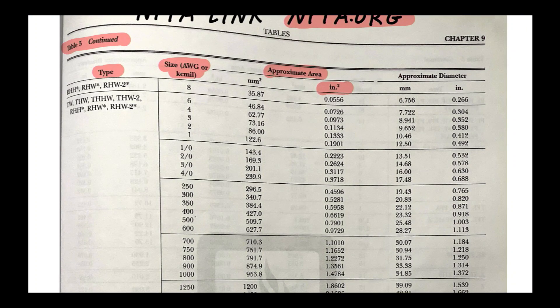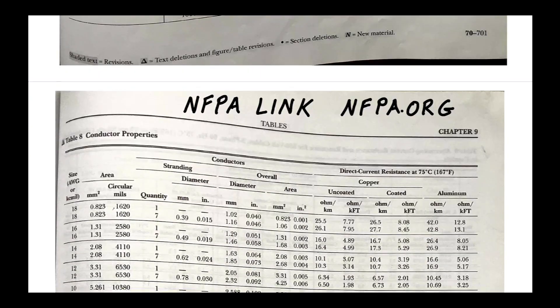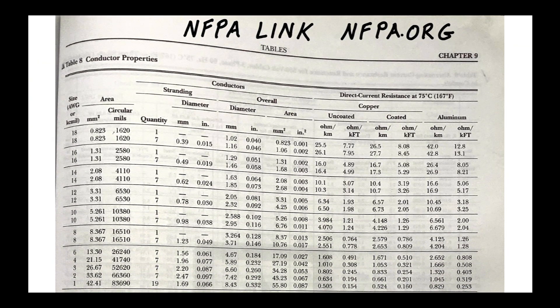The next table we're going to look at is Table 8, called 'Conductor Properties.' It's a very busy table. I highly recommend checking out the NFPA link at nfpa.org. The first thing is to look at this table and not go too nuts — let's look at the first column, which talks about the size in AWG or kcmil.